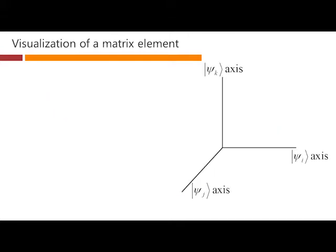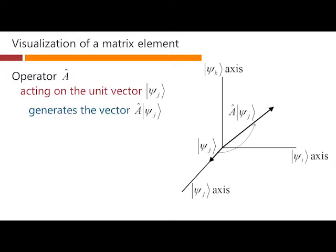Now, let's look at a visualization of what's really going on in a matrix element. The operator A is going to act on this unit vector ψj here, and that's going to generate a new vector. The vector is A operating on ψj. That gives a specific vector as an answer.